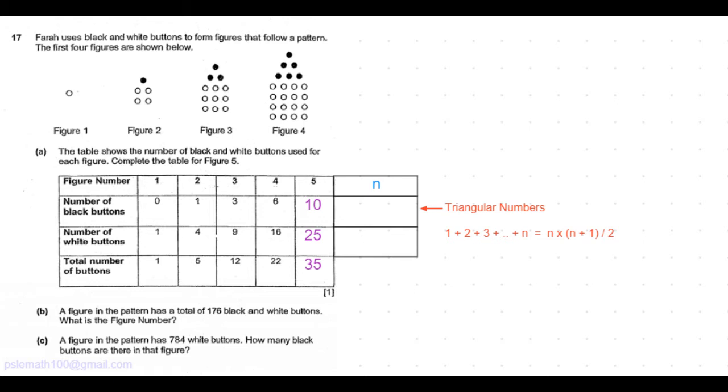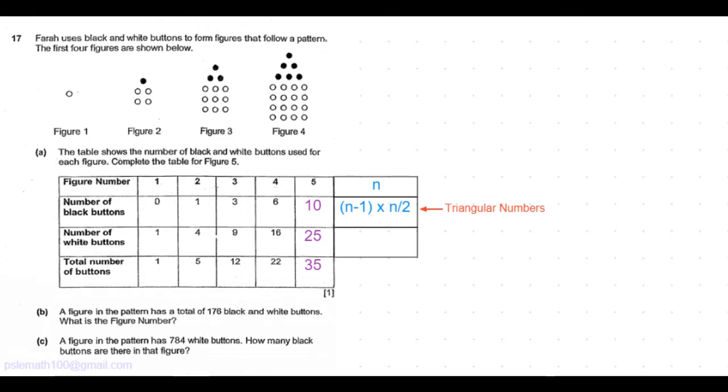In this case, pattern 2 has only 1, and pattern 3 is the numbers added until 2. Pattern 4 is the numbers added until 3. So the triangular number formula until n minus 1 is the formula here. So it is 1 plus 2 plus 3 until n minus 1 equals n minus 1 times n divided by 2. So that is our formula for number of black buttons.